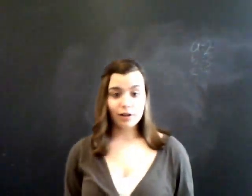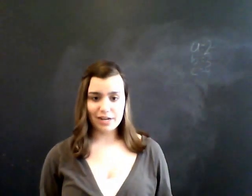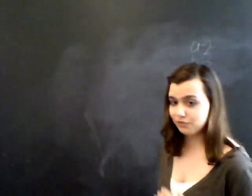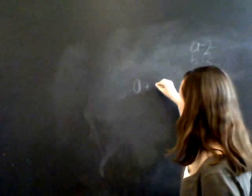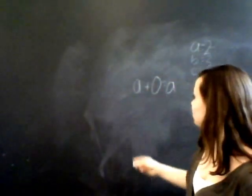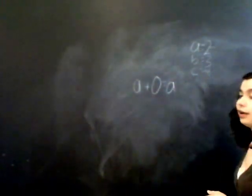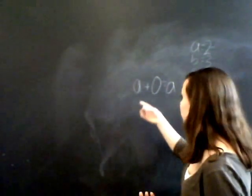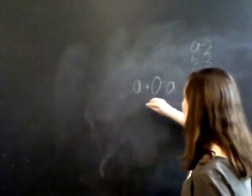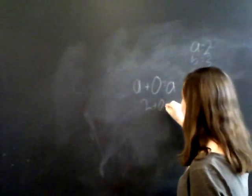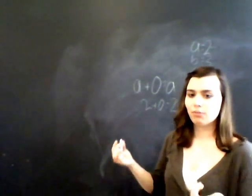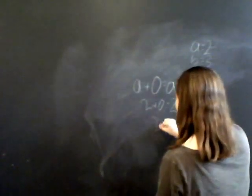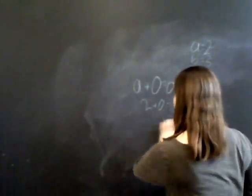Now going on to a very simple one — the additive identity property. I'm sure you already knew this; it's very basic logic. It's a plus 0 equals a. This is basically just stating that 0 is a null value that doesn't change the value of a. 2 plus 0 equals 2. If you have two things and you get 0 more, you still have 2. That's the additive identity property of addition.